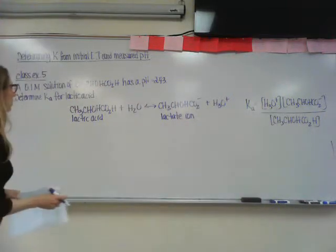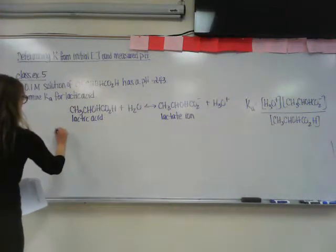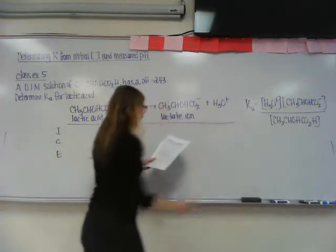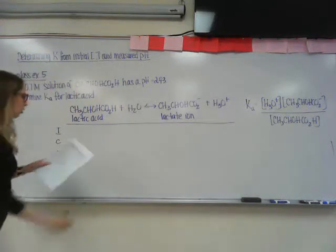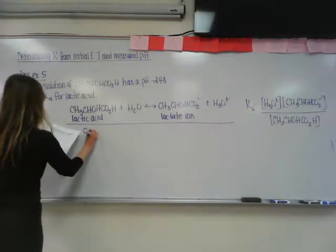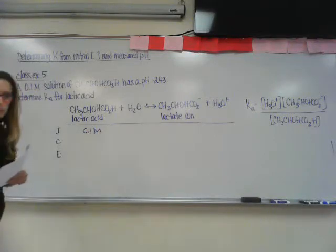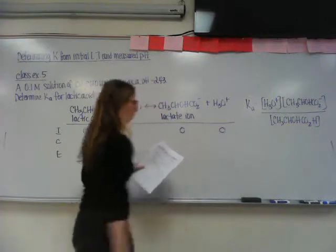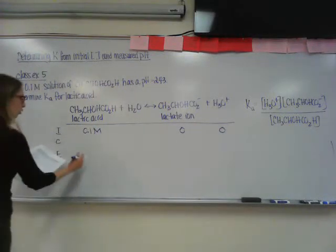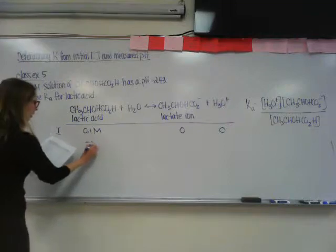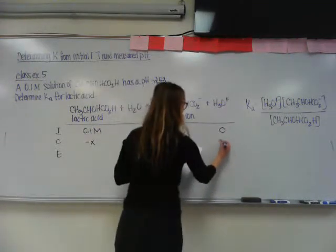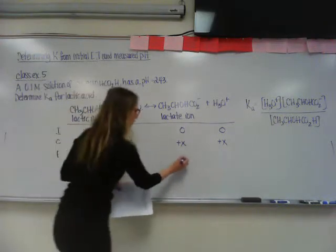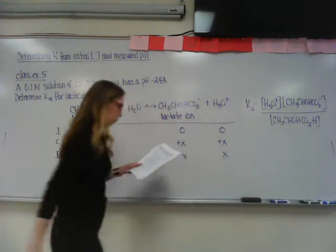So we're going to do an ICE table, and you've got an initial concentration of 0.1 molarity. This concentration is 0, and this concentration is 0 initially. Your change is going to be minus x, plus x, and plus x. That means at equilibrium, it's 0.1 minus x. This would be x, and this would be x.